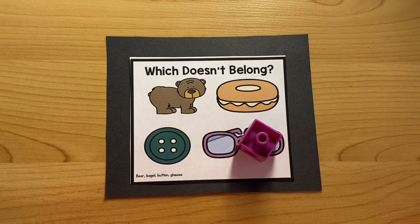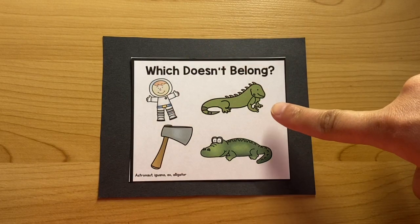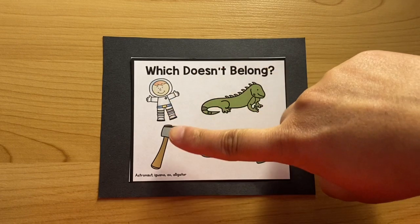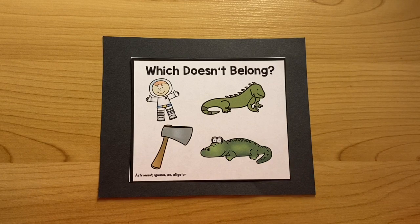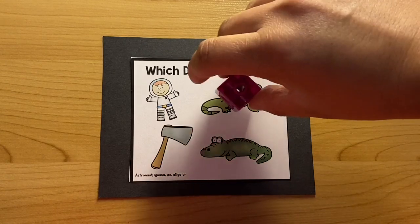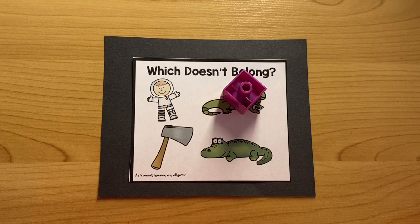Next one. Astronaut. Iguana. Axe. Alligator. Which word doesn't belong? Iguana. That's right. Iguana doesn't belong because iguana begins with the sound I. And the rest of the words begin with the sound A. Good job.